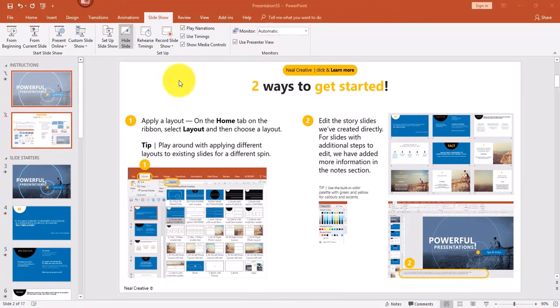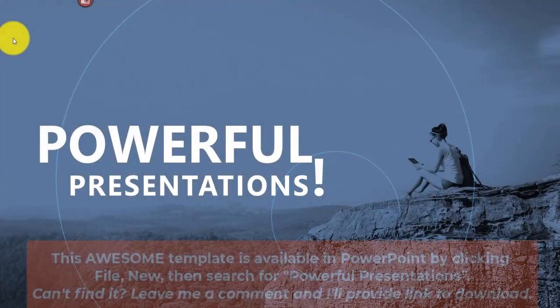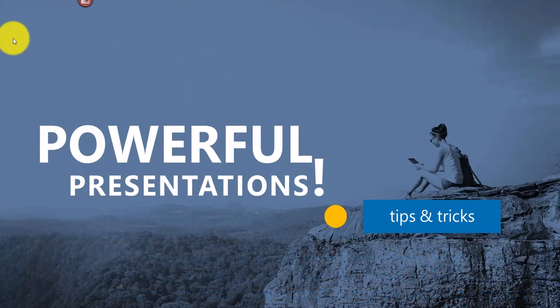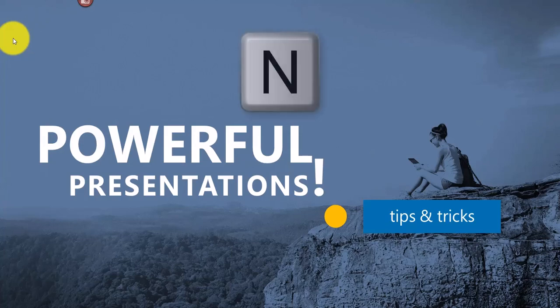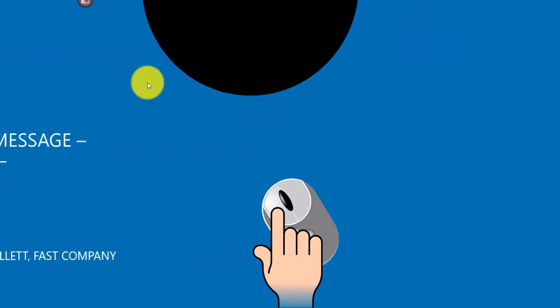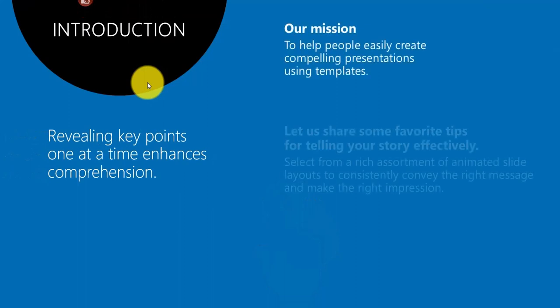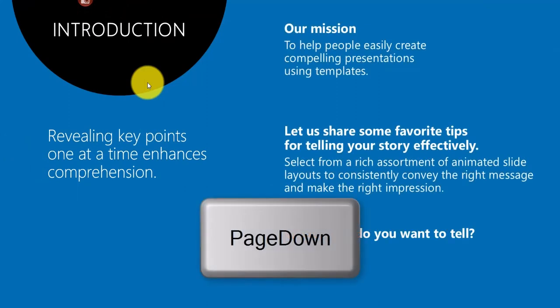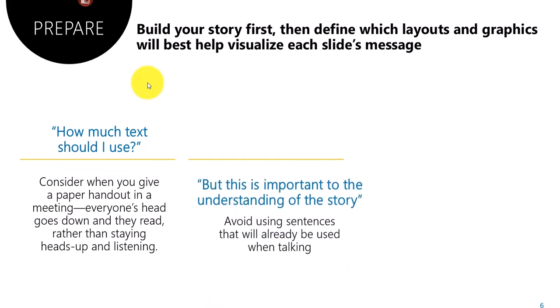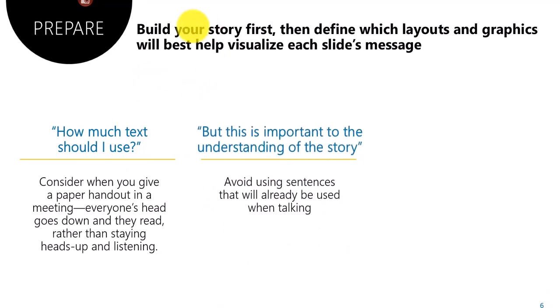Let's start the slideshow to demonstrate multiple ways to navigate. I'll click From Beginning. There are five ways to advance slides: press the N key on your keyboard, click the left mouse button, press the Page Down key, press the Down arrow, or right-click and select Next.